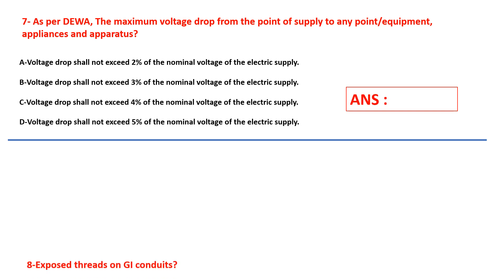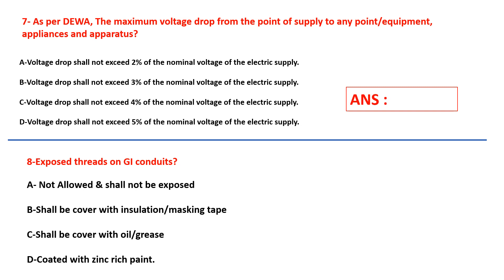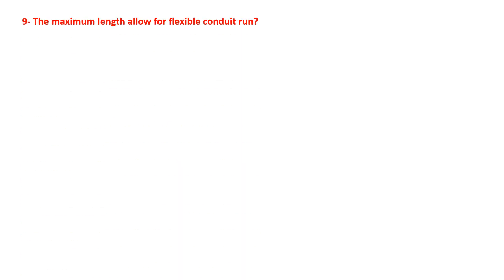Question number eight: for exposed threads on GI conduits, what is required — is it allowed as is, covered with insulation or masking tape, coated with oil or grease, or coated with zinc-rich paint? Select your answer. Question number nine: what is the maximum length allowed for a flexible conduit run?